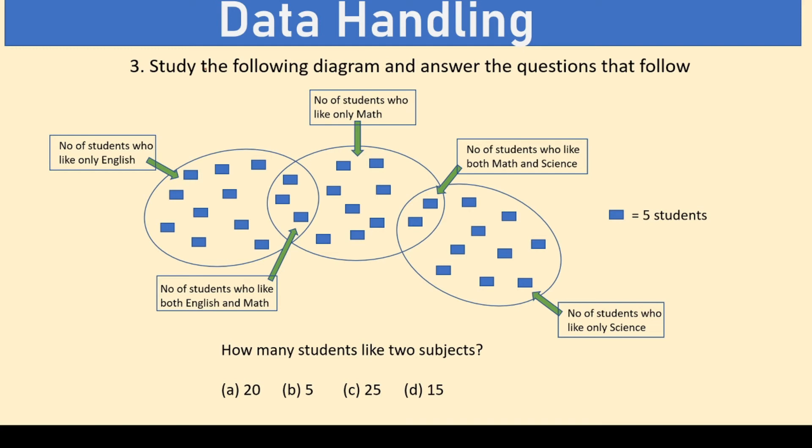Study the following diagram and answer the questions that follow. Here is a Venn diagram that is given. The first set tells us the number of students who like only English. Second set tells us number of students who like only math. And third set tells number of students who like only science. Now, the intersection that is in between it says number of students who like English and math. And the ones here are the number of students who like math and science. Now, each block is five students. How many students like two subjects? So, that is this as well as this. Now, this is three blocks and two more five blocks. So, five of these blocks into five because each block contains five students which is equal to 25. So, our right answer is option C. 25.